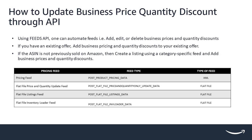Add business pricing and quantity discounts to your existing offer in the Amazon store, along with the standard customer prices, either by flat file or XML file. If the ASIN has not been previously sold in the Amazon store, create a listing using a category-specific feed and add business prices and quantity discounts to it. These are the relevant feed types for the API to add or delete business price and quantity discounts.